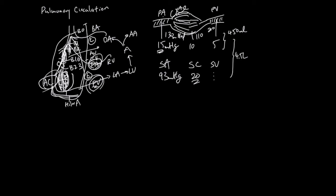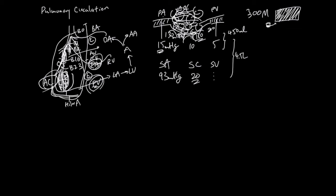All of these capillaries touch alveoli — maybe some here, maybe some on top. There are 300 million alveoli. If you add up all the surface area of alveoli for gas exchange, that's the size of a tennis court — huge. And the blood available in these capillary vessels is only 110 mL, about one third of a soda can. What the lung is doing is spreading this blood across a tennis court — that's incredible.